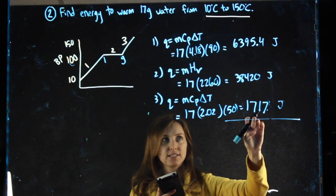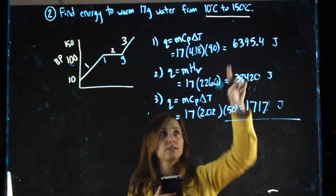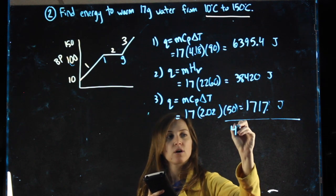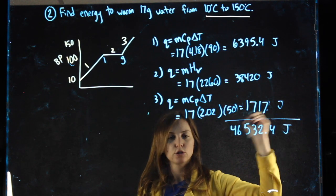Adding these three numbers up: 1717 plus 38420 plus 6395.4. Adding them all together, I get 46532.4 joules.